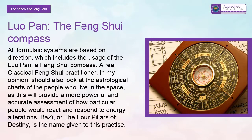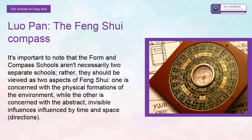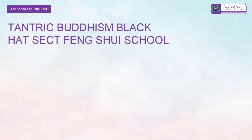The Lopan — the feng shui compass: all formulaic systems are based on direction, which includes the usage of the Lopan, a feng shui compass. A real classical feng shui practitioner should also look at the astrological charts of the people who live in the space, as this will provide a more powerful and accurate assessment of how particular people would react and respond to energy alterations. Ba Zi, or the Four Pillars of Destiny, is the name given to this practice. It is important to note that the form and compass schools aren't necessarily two separate schools; rather, they should be viewed as two aspects of feng shui — one concerned with the physical formations of the environment and the other with the abstract invisible influences of time, space, and directions.